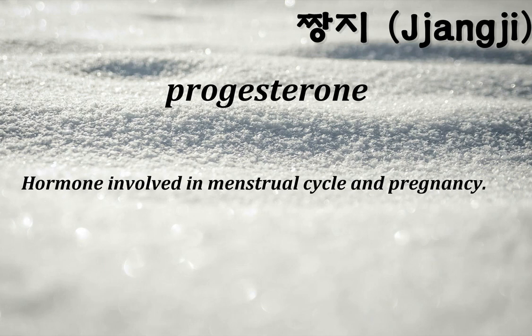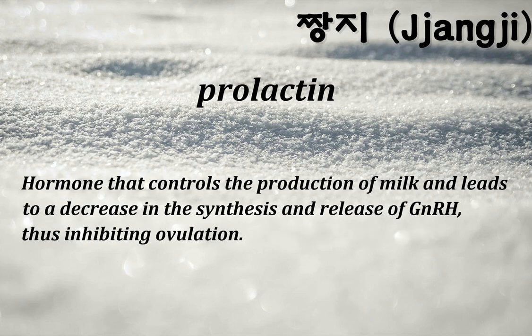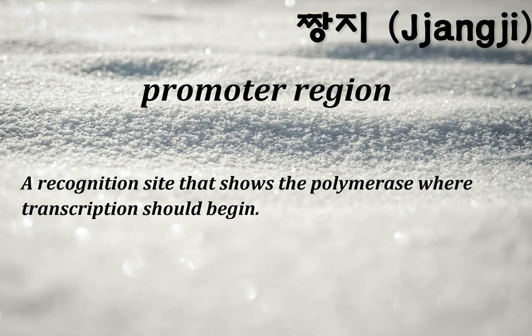Progesterone: hormone involved in the menstrual cycle and pregnancy. Prokaryotic cell: a simple cell with no nucleus or membrane-bound organelles; divides by binary fission and includes bacteria — both heterotrophic and autotrophic types. Prolactin: hormone that controls the production of milk and leads to a decrease in the synthesis and release of GnRH, thus inhibiting ovulation. Promoter region: a recognition site that shows the polymerase where transcription should begin.